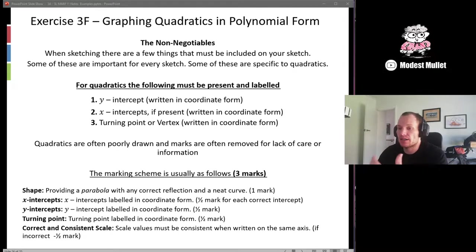So by non-negotiable I mean that they must be included. You will be losing marks if these are missing, and we want to build these habits now so it helps you come year 12 exam time in particular, because we want to avoid any reason for examiners to take marks from you. So for quadratics the following must be presented and labeled: y-intercept, the x-intercepts if they're present, so sometimes there's a quadratic that doesn't have x-intercepts, and then the turning point or vertex. Now all three of these things must be in coordinate form. A lot of the time quadratics are poorly drawn and they don't represent the function. We must remember that quadratic is an equational function and we must represent that in a graph correctly, and the marks generally disappear for lack of care.